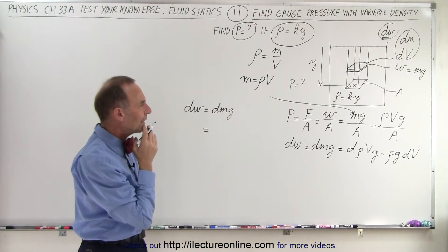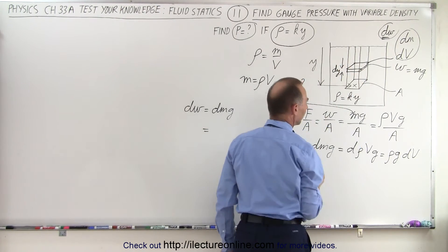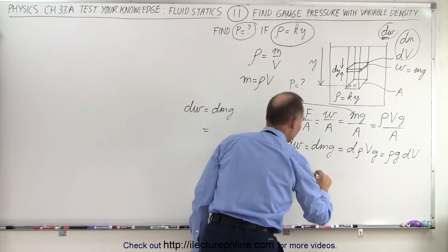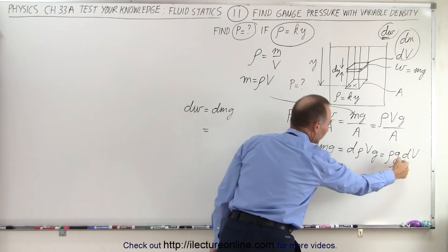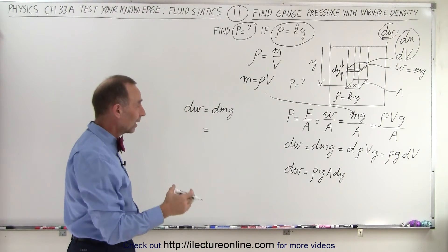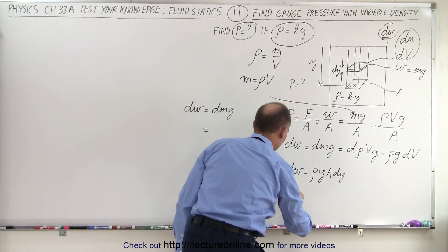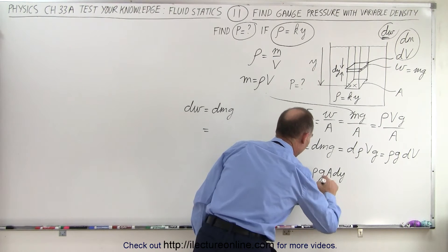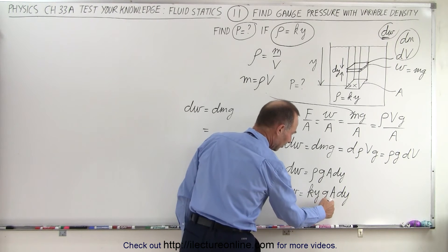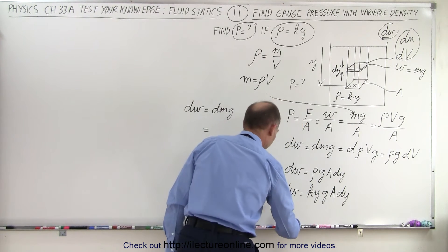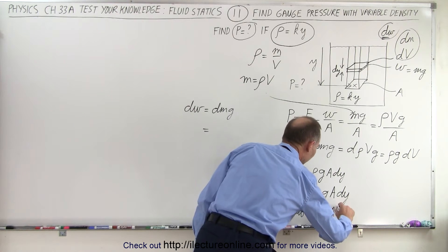Now dV can be written as area times a small dy. So dw equals density times g times area times dy. Since our density equals k times y, we substitute to get dw equals k·y·g·A·dy. Here k, g, and A are all constants, leaving y·dy. Therefore, the total weight W equals the integral of all the dw's, which is k times g times A times the integral of y dy.